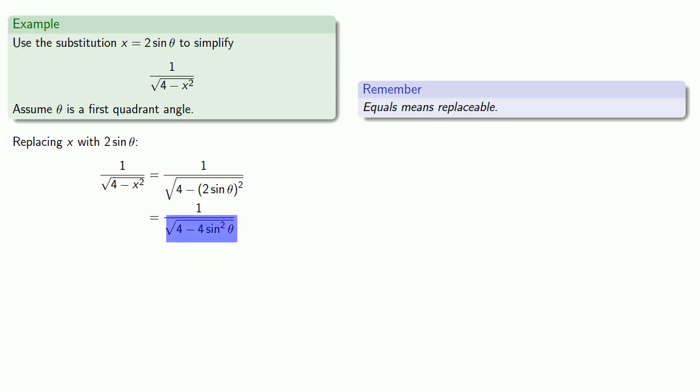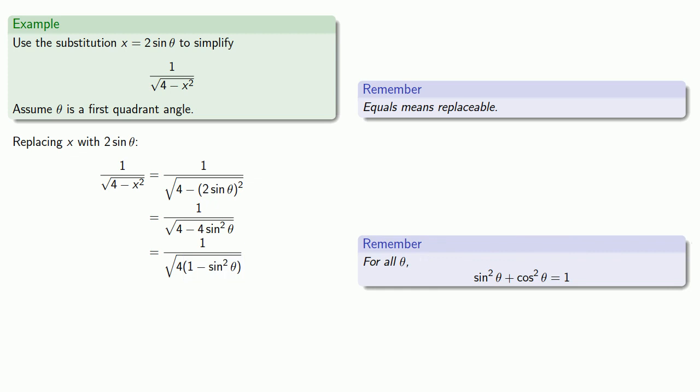Now both of our terms have a factor of 4, so let's remove that common factor. And this expression 1 minus sine squared theta corresponds to the identity sine squared theta plus cosine squared theta equals 1. And so that means we can simplify it.